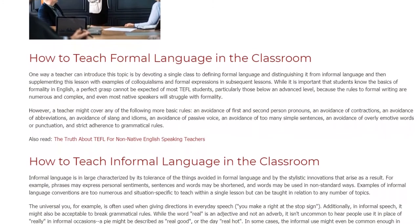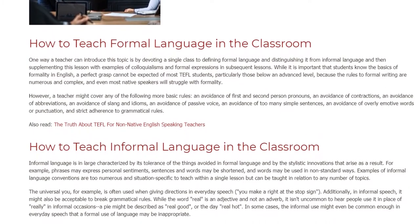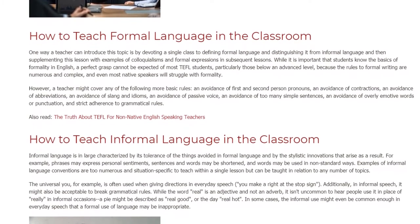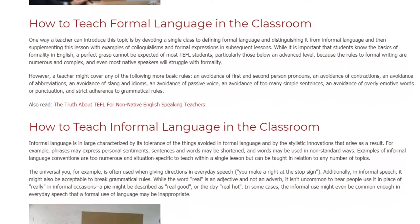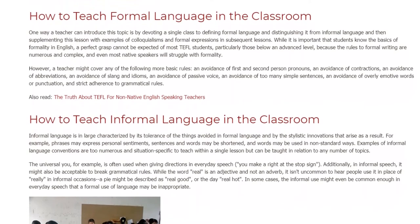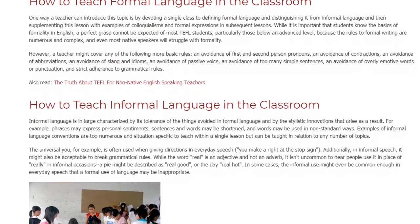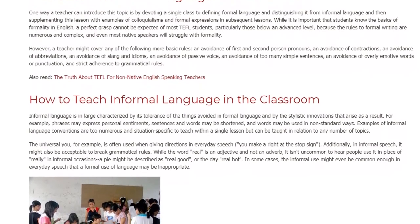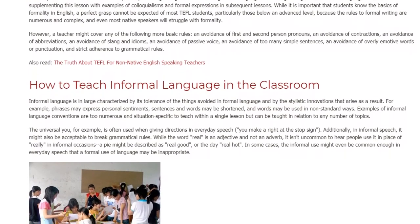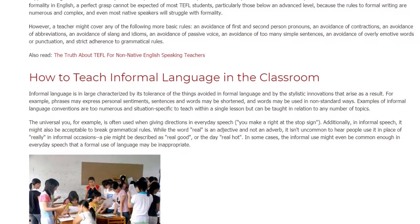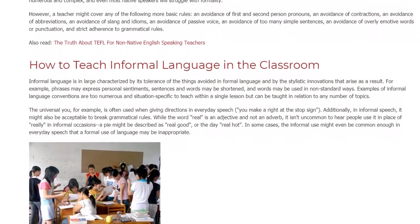How to teach informal language in the classroom? Informal language is in large part characterized by its tolerance of the things avoided in formal language and by the stylistic innovations that arise as a result. For example, phrases may express personal sentiments, sentences and words may be shortened, and words may be used in non-standard ways. Examples of informal language conventions are too numerous and situation-specific to teach within a single lesson but can be taught in relation to any number of topics. The universal 'you,' for example, is often used when giving directions in everyday speech.